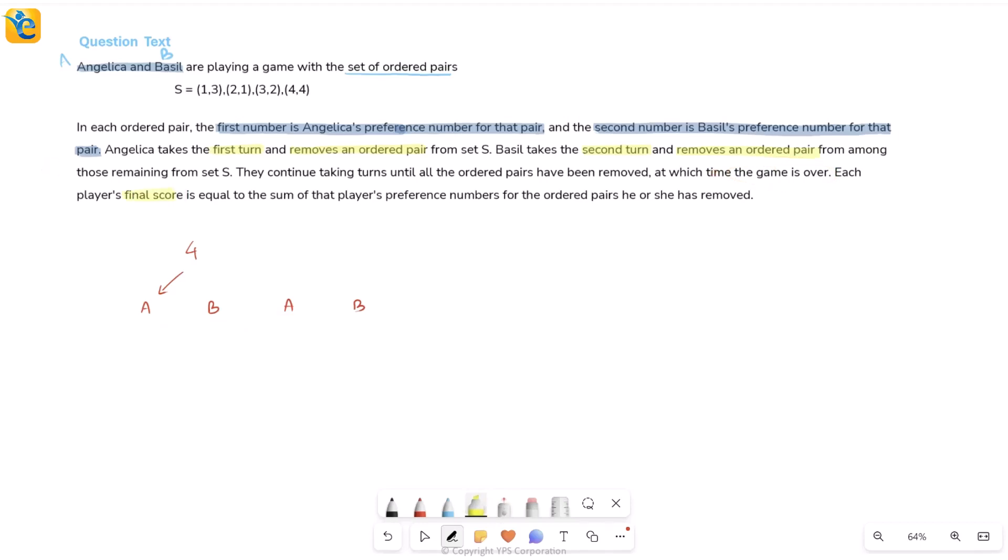Final score of any player is equal to sum of that player's preference numbers for the ordered pairs he or she has removed. So final score of any player is equal to the sum of that player's preference numbers only and preference numbers from where? Anyway, in all of these ordered pairs, both of them have a preference number, but we're not taking all of the preference numbers. We are just taking the sum of those from the ordered pairs that this particular person removed.